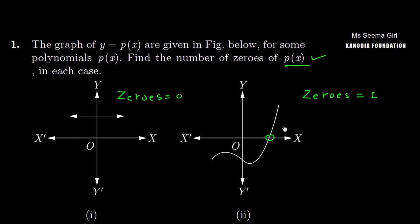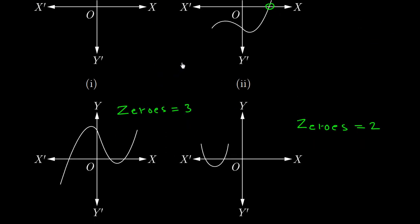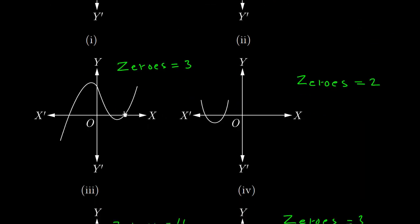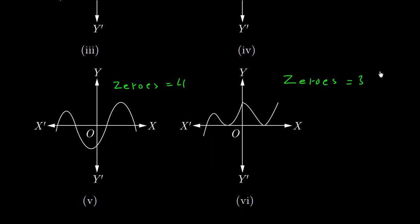Once again: here the intersection point is 1, so 1 zero. Here there is no intersection, so zero zeros. Here the intersection points are 3, therefore 3 zeros. Here the intersection points are 2, therefore 2 zeros. And now in this one: 1, 2, 3, 4 — four zeros. And this one: 1, 2, 3 — three zeros.